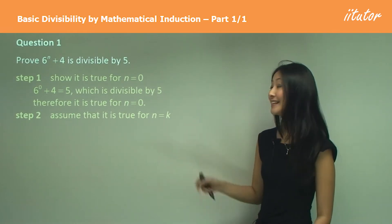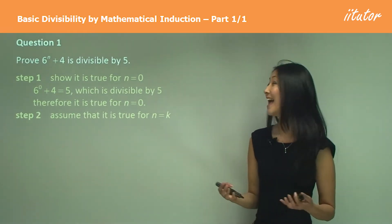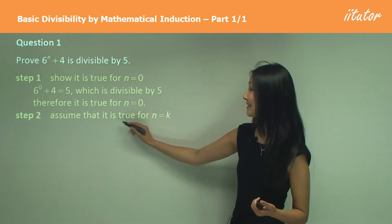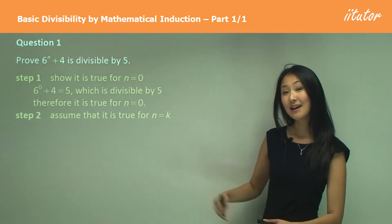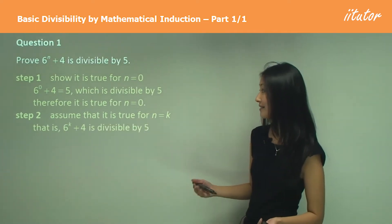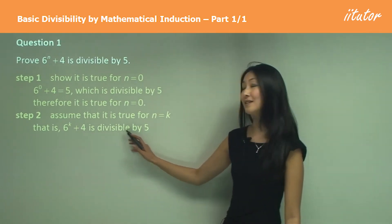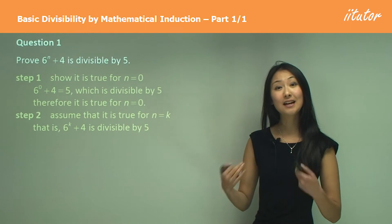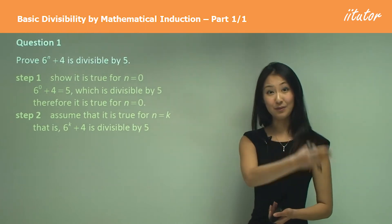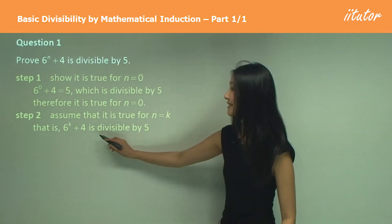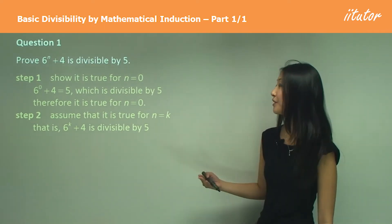So moving on to step two, this is where we make our assumption. So we want to assume that this is true for n equals k. So how we write that is 6 to the power of k plus 4 is divisible by 5. So instead of writing equals, which is what we did with the equations, we just write is divisible by 5 because that's what we're trying to prove.